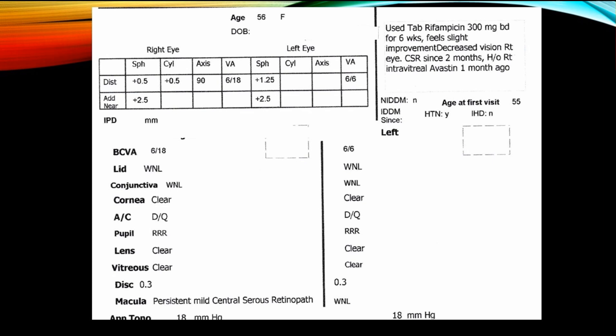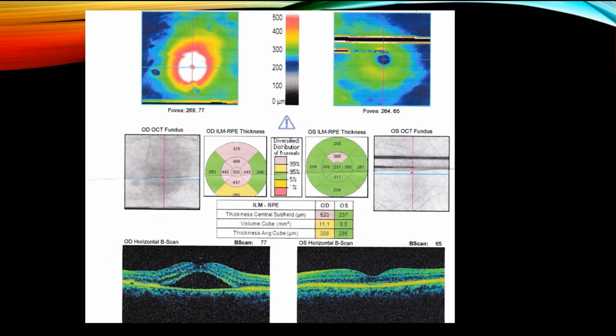Visual acuity was 6/18 and persistent mild central serous retinopathy was seen on examination of the fundus. Visual acuity was 6/6 in the left eye. Here you can see the OCT scan showing findings in the right eye and the left eye. In the right eye, there is a colored picture in which you can see that the elevation of the retina is shown in red.